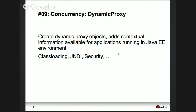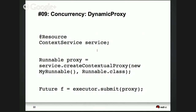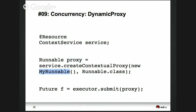The fourth managed object is a dynamic proxy via ContextService. This allows you to add contextual information — class loading, JNDI, security context — to any POJO in your Java EE environment. You inject a ContextService, then call createContextualProxy, specify a class, and get a runnable proxy back. You submit that proxy, and within that runnable instance, whenever you do class loading it happens in the container class loader, and whenever you resolve JNDI it's resolved by the container.